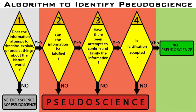Accepting falsification usually comes in the form of updating or correcting the information to account for the new information which falsified the original information. Not accepting falsification usually comes in the form of not updating or correcting the information.